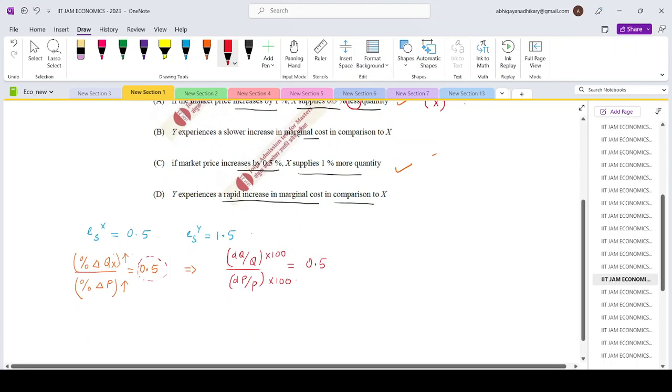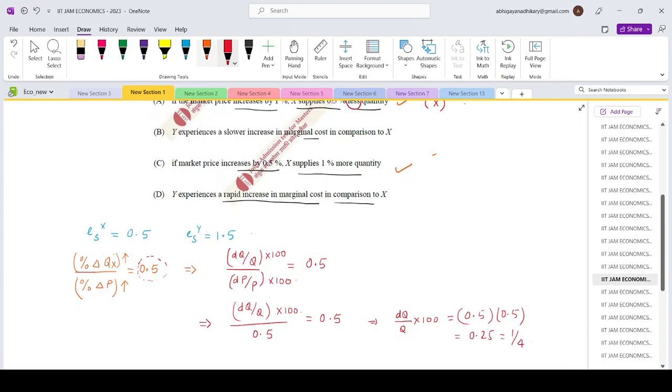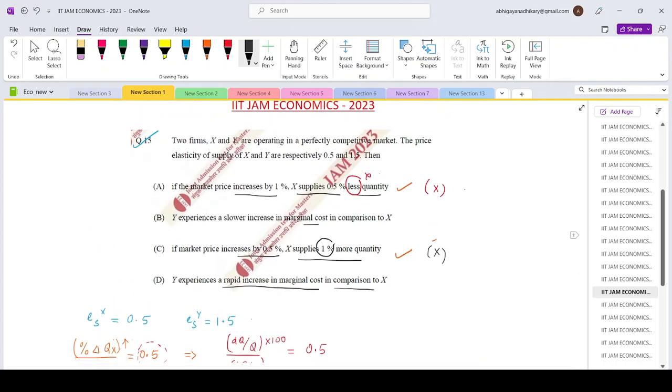So the question is, if the market price increases by 0.5%, the denominator would be 0.5, which equals 0.5. So what is the percentage change in quantity? It is 0.5 times 0.5, which is 0.25 or 1/4%, which is again incorrect because we are given 1% in the option. So option A and option C both are wrong directly.